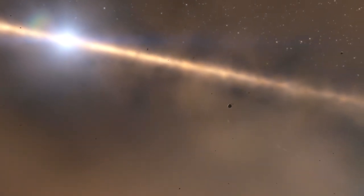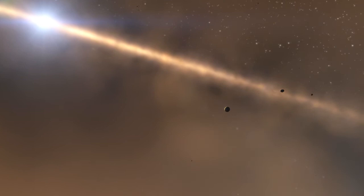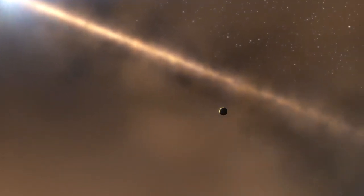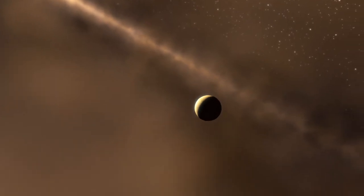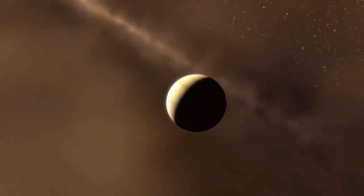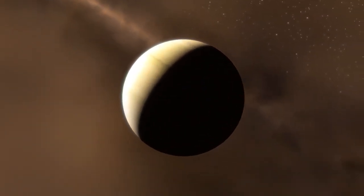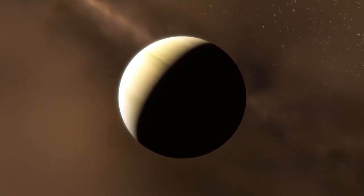The planet has the smallest orbit of all directly imaged exoplanets so far, lying as close to its host star as Saturn is to the Sun. This discovery proves that gas giant planets can form in only a few million years, a short time in cosmic terms.